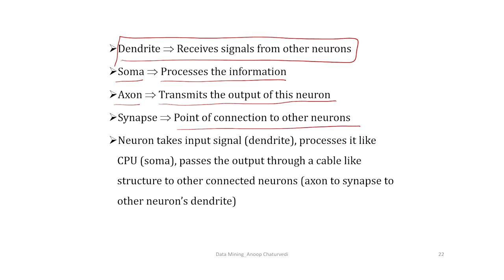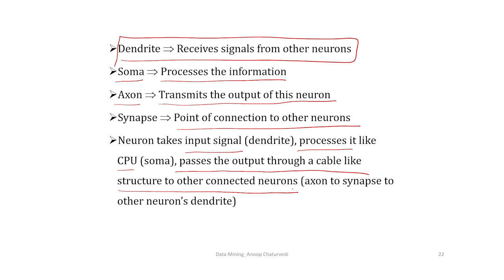A neuron takes input signals, processes them like a CPU, and passes the output through a cable-like structure to other connected neurons. This is exactly what we do in artificial neural network: it gets input signals or input data, does some computation, gets output, and passes it to the nodes of the next layer.